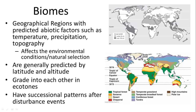Each biome also has its own successional patterns after disturbance events, looking at how plants and animals re-establish and grow after something changes the landscape — such as a fire or a flood. These are going to be different based on the biome: fires are characteristic of the chaparral, and floods are found in tropical areas with wet and dry seasons. The response of living things to these disturbance regimes is specific to those biomes as well.